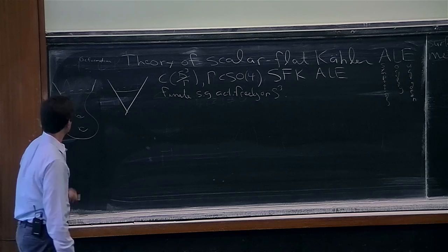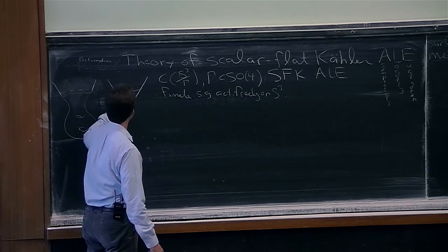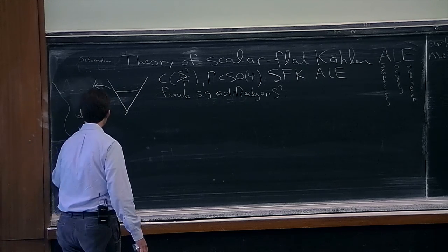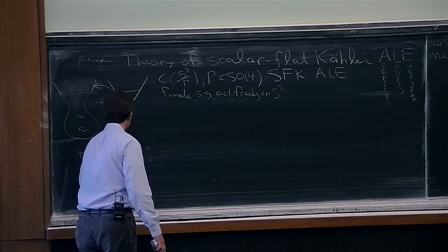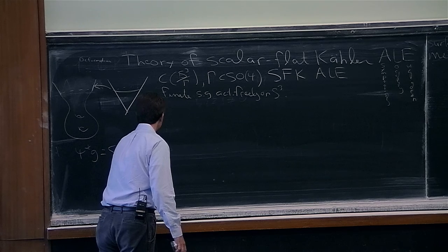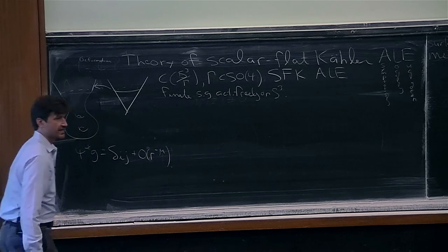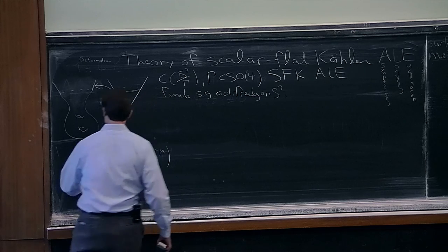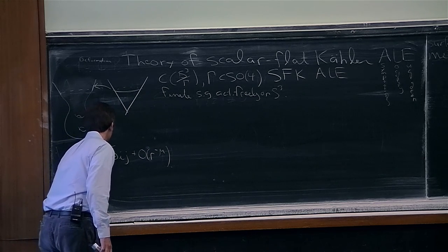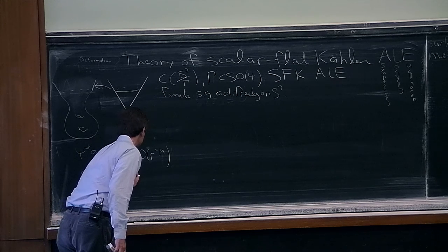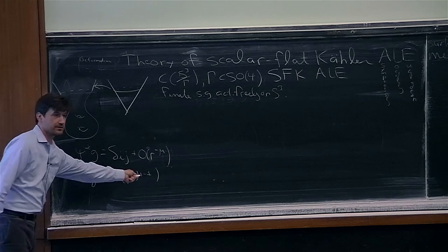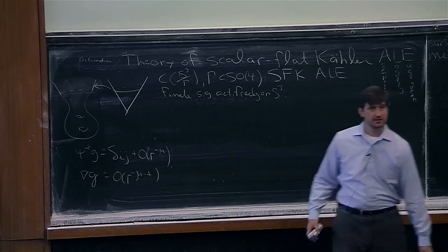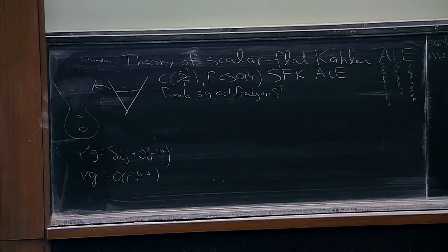Anything can happen on a compact set. There's some diffeomorphism from the complement of a ball in the cone to the manifold. When you pull back the metric, it looks like the Euclidean metric plus decaying terms, where μ is positive. Derivatives decay like O(r^{-μ-1}), and higher derivatives decay as you'd expect. So an ALE metric is just asymptotic to the Euclidean metric — it looks like a cone at infinity.